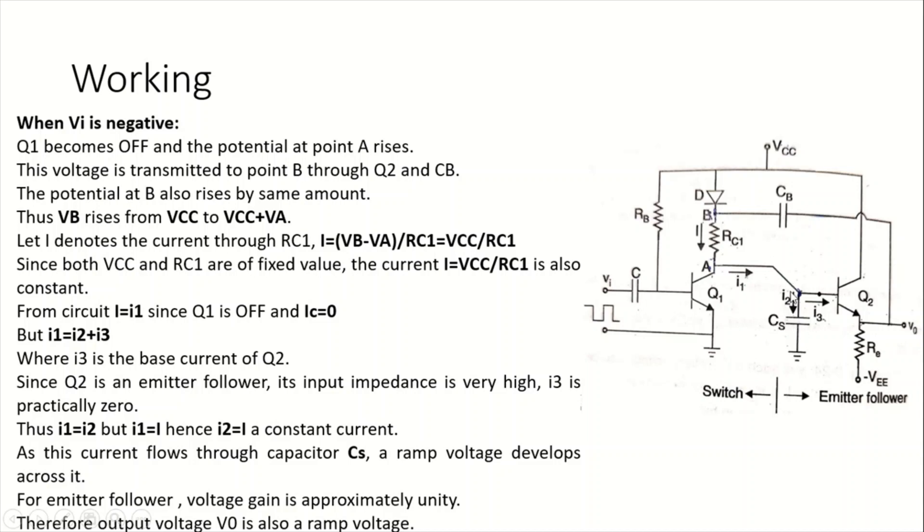When this constant current is flowing through capacitor CS, a ramp signal or a ramp voltage gets developed. As we are discussing, this second stage transistor is an emitter follower. Emitter follower voltage gain is actually approximately unity, meaning whatever the input signal, it has to be followed at the output. So Vo should be approximately equal to VA. Whatever ramp voltage gets developed at the input side of this capacitor, the same ramp voltage will be appearing at the output of this circuit Vo.